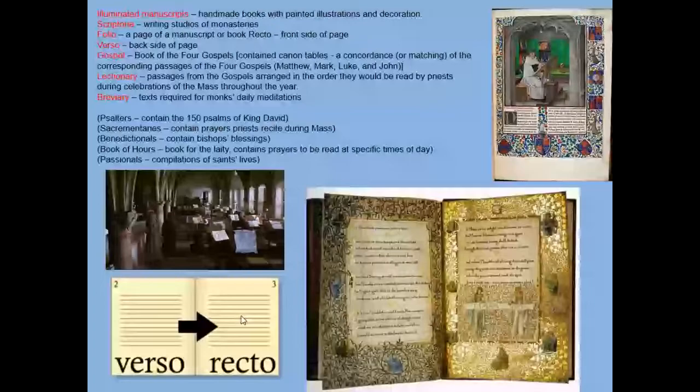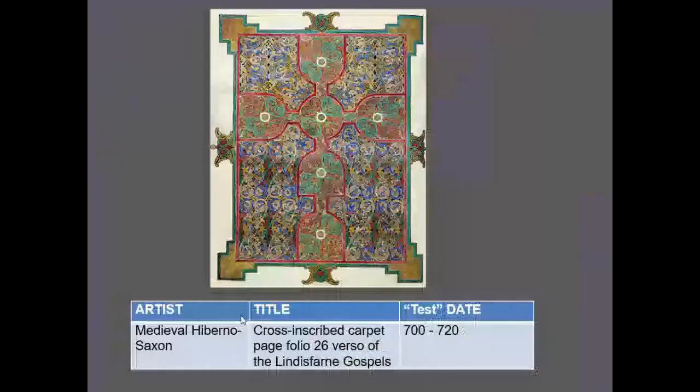Some texts were read or recited at specific times of day or times of the year. Passionals were also more widely distributed — they were compilations of the lives of saints. Here's an example of a folio.